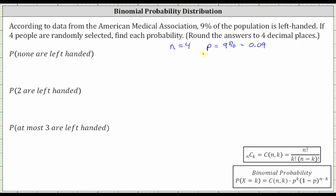Now we will find the probabilities using desmos.com. The first probability is the probability that none are left-handed. This is the probability that X is equal to zero.